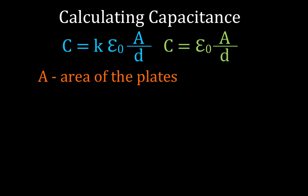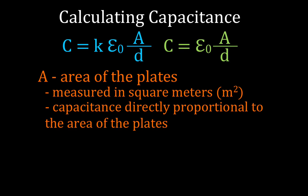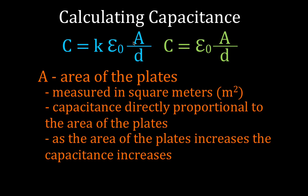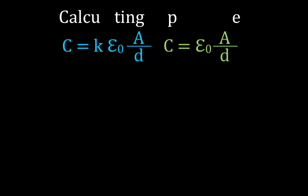A is the area of the plates. The capacitor has parallel plates, and A is the area of those plates measured in meters squared. The capacitance is directly proportional to the area of the plates — as A increases, the capacitance increases. That should make sense: the bigger the plates, the more charge that can be stored on them.